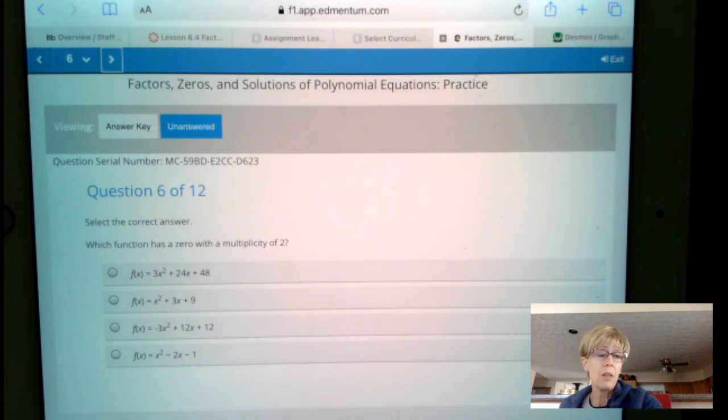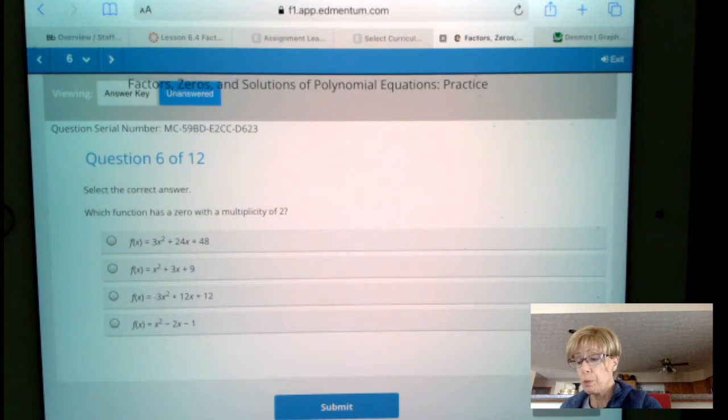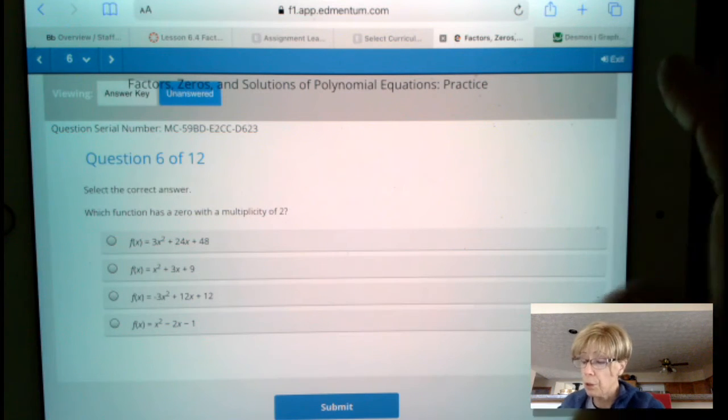Number 6 says, which function has a zero with multiplicity of 2? The thing about multiplicity of 2 is that the graph touches the x-axis. So, as I was typing in the answers, I accidentally deleted one, so I'm going out of order a little bit.